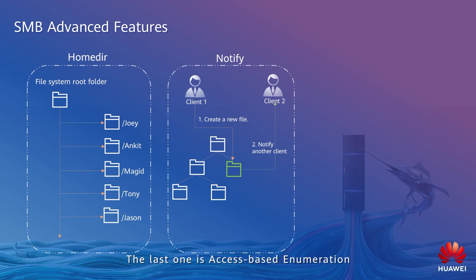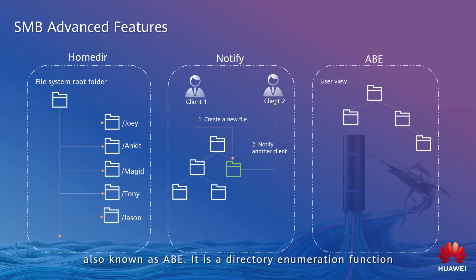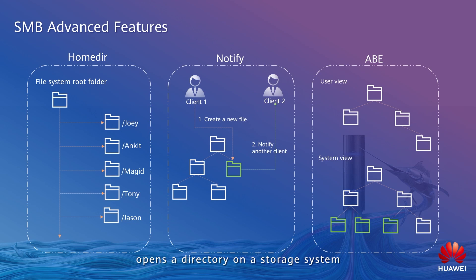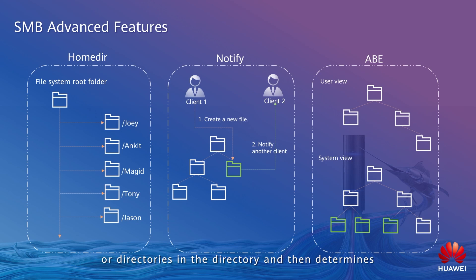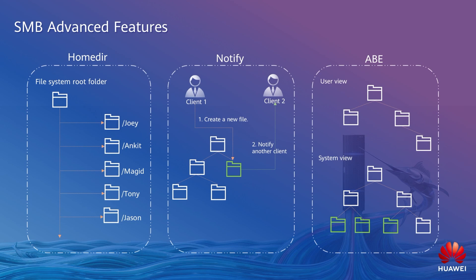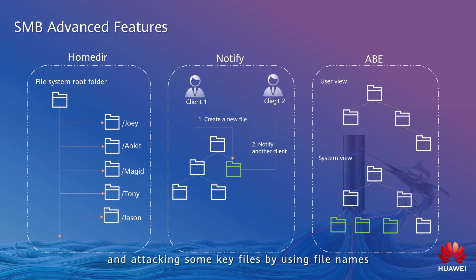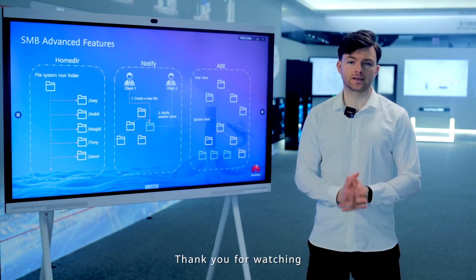The last advanced feature is Access-Based Enumeration, also known as ABE. It is a directory enumeration function based on permissions. When the ABE function is enabled and a client opens a directory on a storage system, the storage system determines whether the user is permitted to access the files or directories and then determines whether or not to display them. The storage system hides the files and directories that the user is not permitted to access. This improves security and privacy by preventing users without permissions from guessing and attacking key files using file names. That concludes my presentation. Thank you for watching.